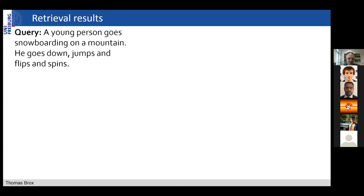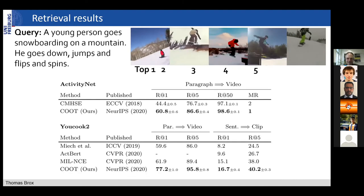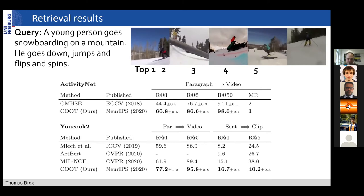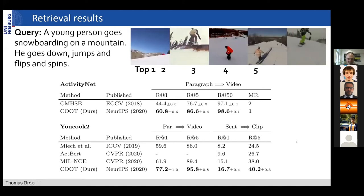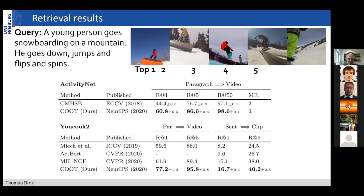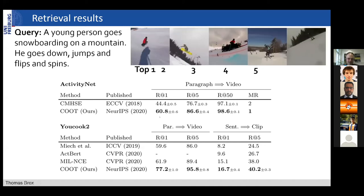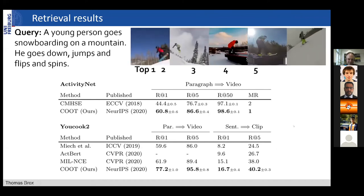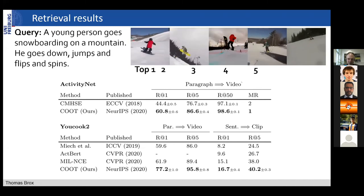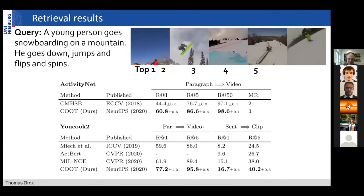Here are some retrieval results. The query is 'a young person goes snowboarding on a mountain' — you know that one from the initial example — and these are the top five examples retrieved. We tested on ActivityNet on one hand and YouCook2 on the other. You see the retrieval rates, and especially the retrieval at rank one — basically the top-one retrieval performance — is quite high. You can do this retrieval both from a paragraph to a video at the global level, and also at the local level — paragraph to video for YouCook2 and sentence to clip.